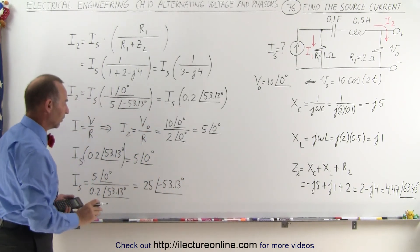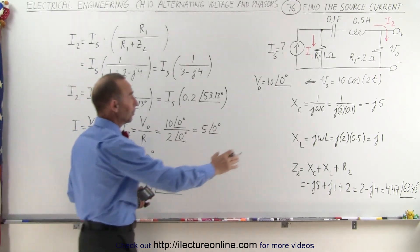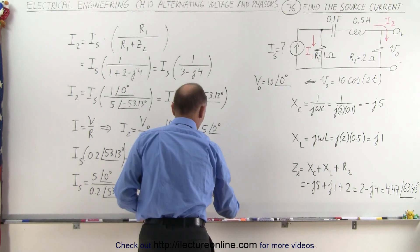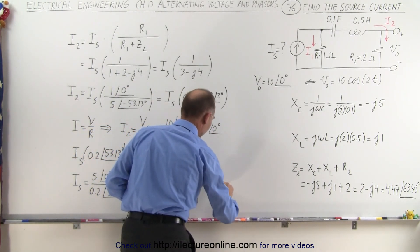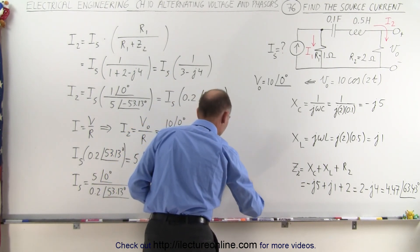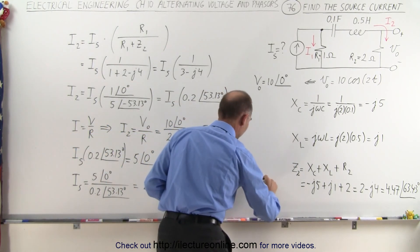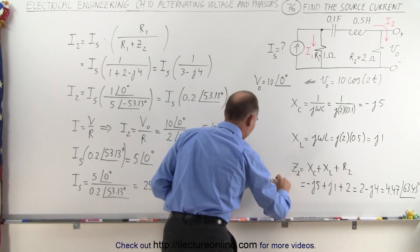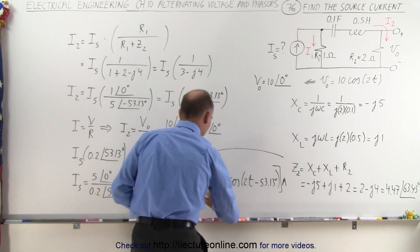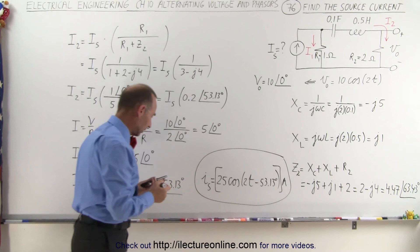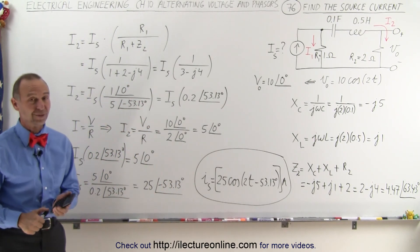So that's the source current in magnitude and phase angle format. Putting it in time-domain format, we can say that i of the source is equal to 25 amps times the cosine of 2t minus 53.13 degrees. And that would be in amps. That's how we calculate the source current when we're given the output voltage.